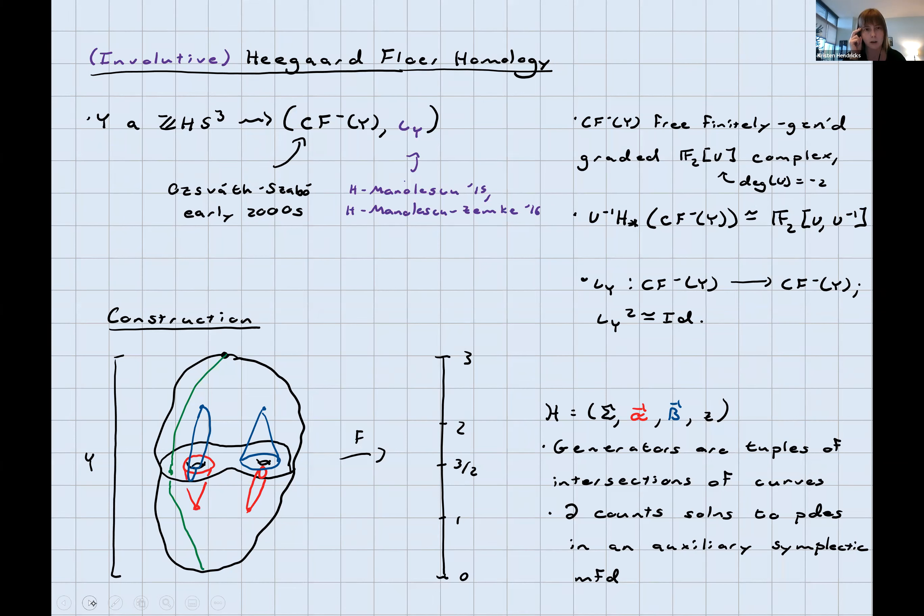We'll restrict ourselves to integer homology spheres for the sake of things being simpler. Given an integer homology sphere, Ozsváth and Szabó associate to it a chain complex CF minus of Y. This is some free, finitely generated, graded F2 adjoined U chain complex. F2 is the field with two elements. U is some variable of degree minus two. They constructed this in the early 2000s. It's had tons of applications. Algebraic features include that if I take the homology and localize at U, so I let U have an inverse, then the homology is just F2 U U inverse. So this is after killing any U torsion. What does it mean that we're considering the involutive theory? It means we're considering this along with some graded chain map iota Y from the complex to itself, which squares to something chain homotopy equivalent to the identity.